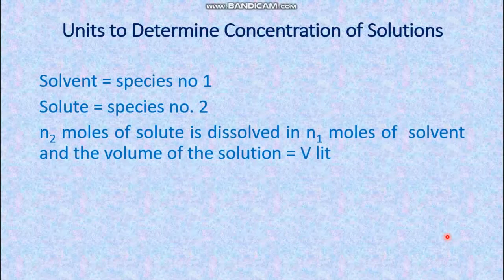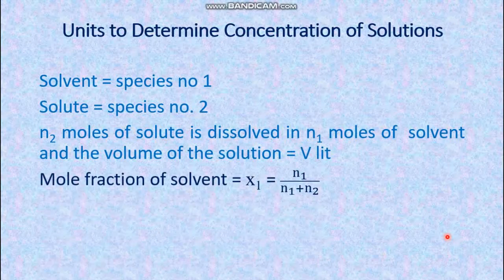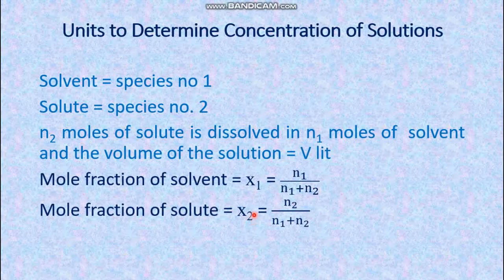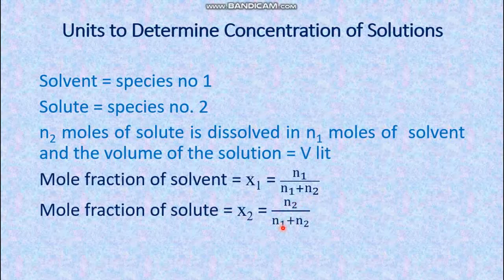If n2 moles of solute is dissolved in n1 moles of solvent and the overall volume of the solution is V liters, then the mole fraction of the solvent, x1, is n1 divided by (n1 + n2), and the mole fraction of the solute, x2, is n2 divided by (n1 + n2). Mole fraction is dimensionless because moles in the numerator and denominator cancel each other.